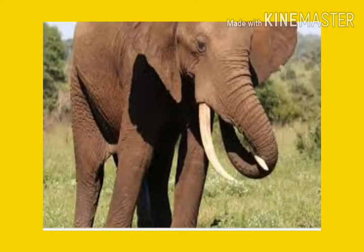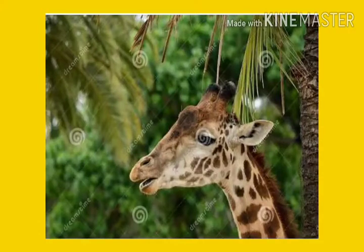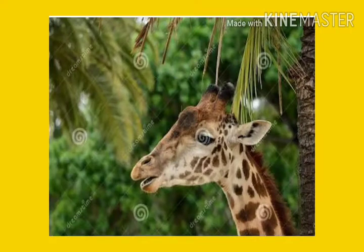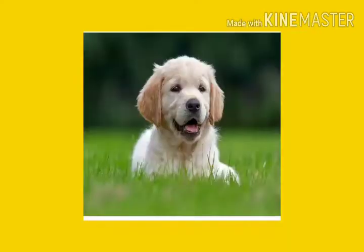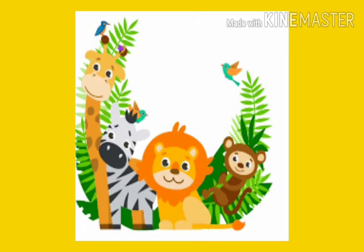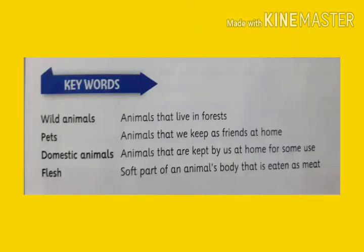Let's remember: there are many animals found around us. Wild animals are those that live in forests. Pet animals are those that we keep at home. Domestic animals are useful to us in many ways. Some animals eat plants, some eat flesh, and some eat both plants and the flesh of other animals. Animals also need a home to live.